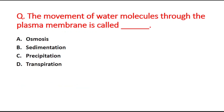Next question: the movement of water molecules through the plasma membrane is called blank. Option A is osmosis, option B is sedimentation, option C is precipitation, and option D is transpiration. The right answer is option A, osmosis. The movement of water molecules through the plasma membrane is called osmosis.